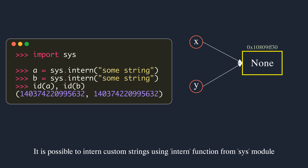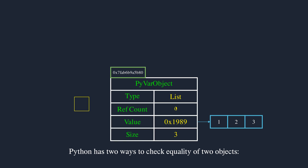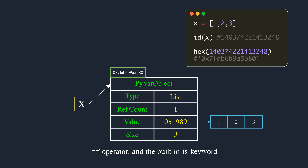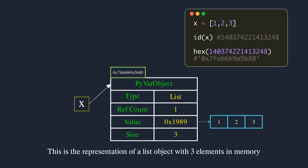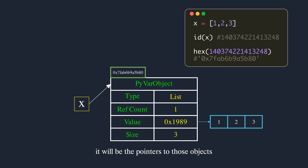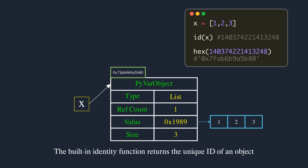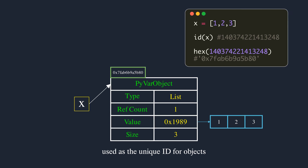It's possible to intern custom strings using the intern function from the sys module, though it's rarely used in normal application code. Python has two ways to check equality of two objects: the double equals operator and the built-in is keyword. Consider a list object with three elements in memory — for simplicity the elements are shown directly in the array, but they are actually pointers. The built-in id() function returns the unique id of an object; in CPython, the memory address of the object is used as the unique id.